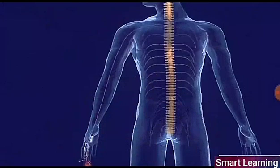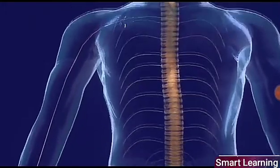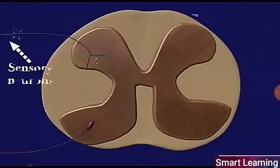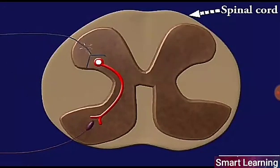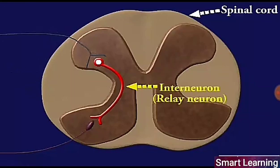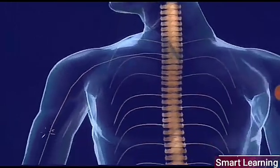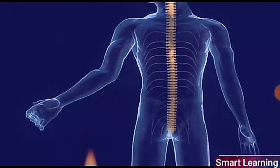When our hand accidentally touches a hot object, the heat is sensed by thermoreceptors present in the skin of the hands. The receptors trigger nerve impulses in sensory neurons. Sensory neurons transmit the message to the spinal cord. In the spinal cord, the impulse is passed on to interneurons, which in turn pass it to the motor neurons. The motor neurons transmit the instruction to the muscles in our arm; the arm muscles contract and pull our hand away from the hot object. This is also referred to as spinal reflex.